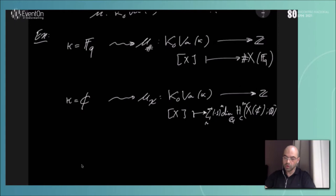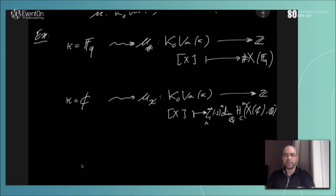Since the targets of these classical motivic measures are very simple (ℤ), the kernels are huge and they cannot distinguish too many Grothendieck classes. It would be interesting to find a motivic measure with the correct balance: an interesting target such that the kernel is not so large, but where one can still compute.